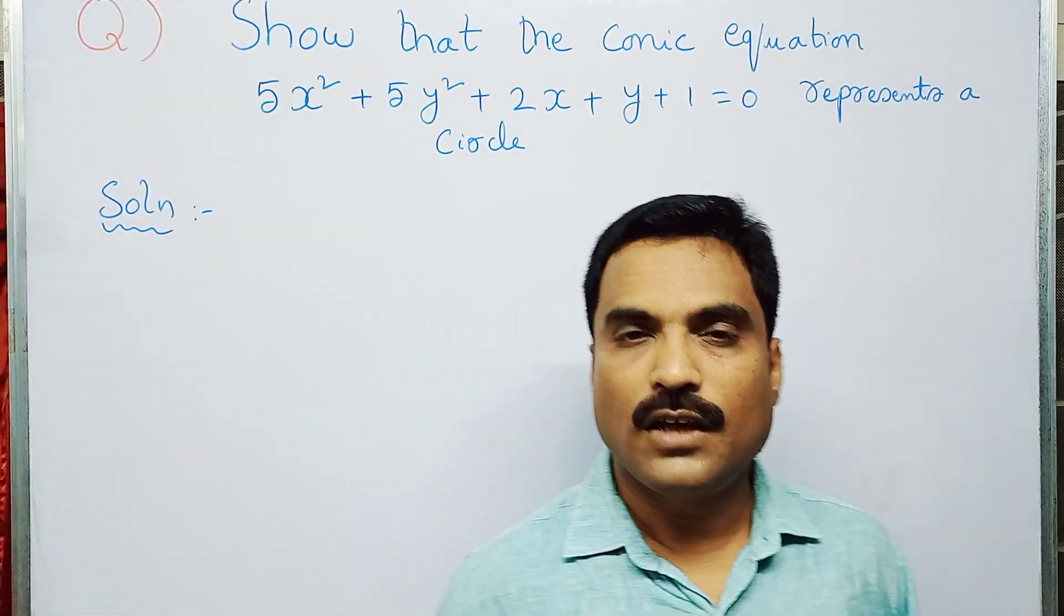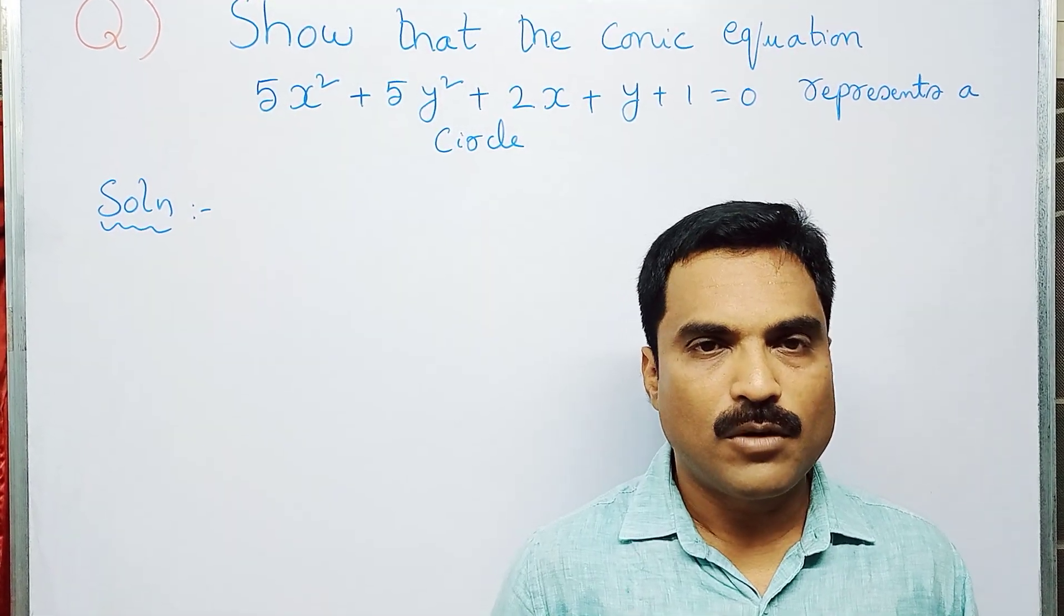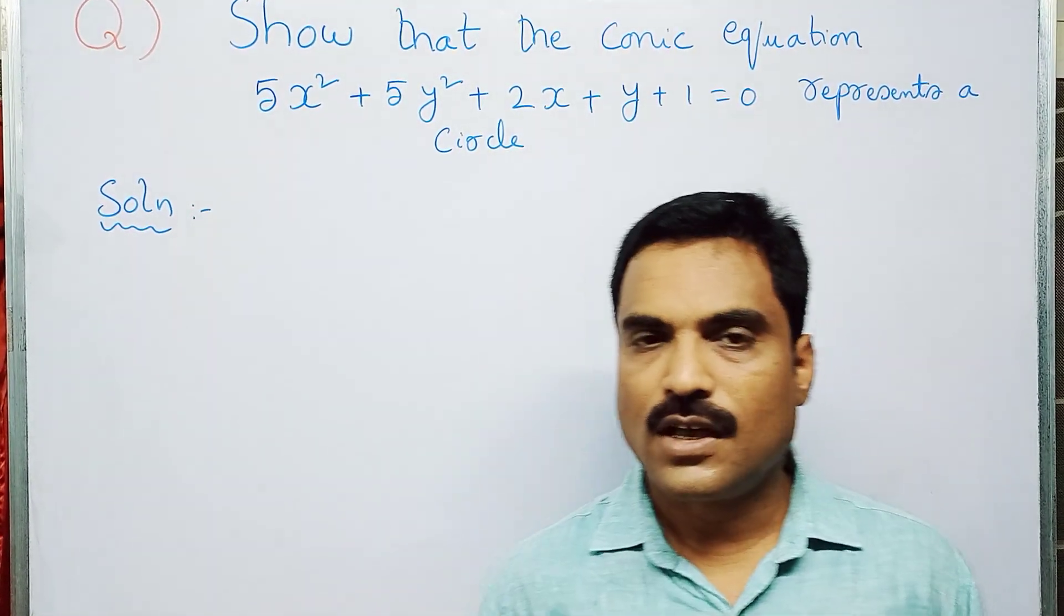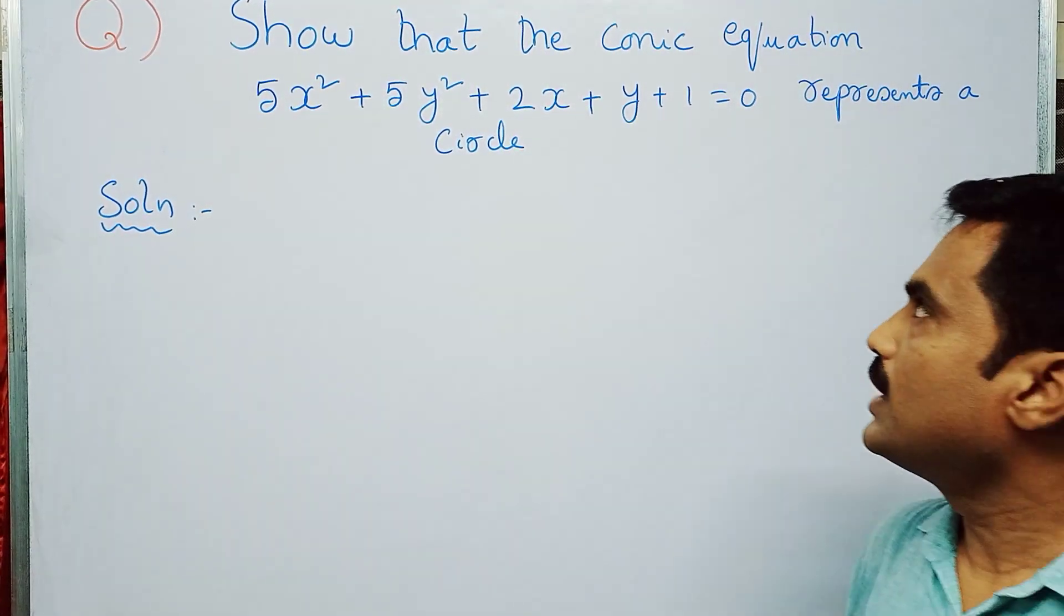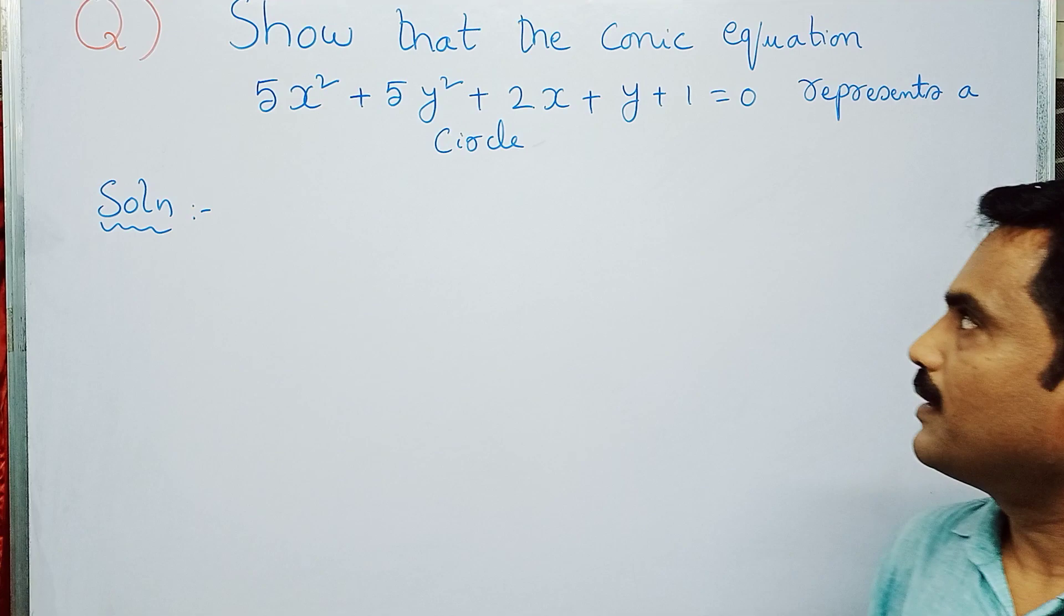Hi, welcome to my channel Yanam Takshashila. In this new video, I am going to solve a mathematical problem under the topic conics. The problem is: show that the conic equation 5x² + 5y² + 2x + y + 1 = 0 represents a circle.